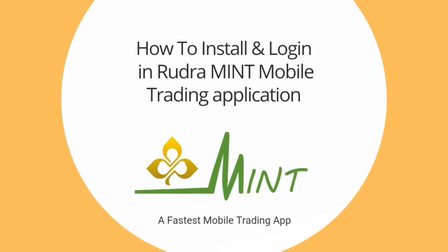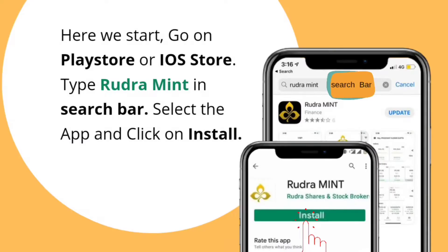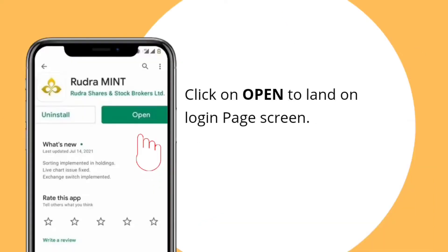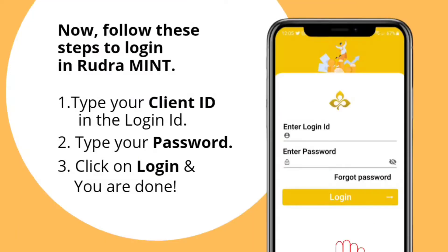How to install and login in Rudra Mint mobile trading application. Rudra Mint, a fastest mobile trading app. Go on Play Store or iOS Store, type Rudra Mint in the search bar, select the app and click on Install. Click on Open to onboard on the login page.